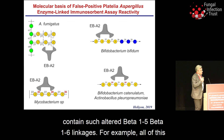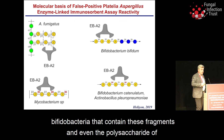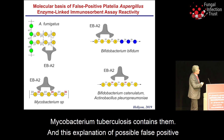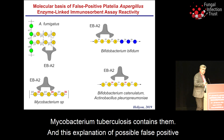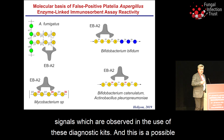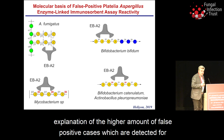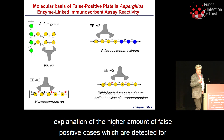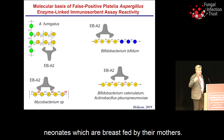This very important observation gives us the possibility to explain false positive signals observed with this diagnostic kit, because many of these bacteria were shown to produce polysaccharides which contain such alternating beta-1,5 and beta-1,6 linkages. For example, all these bifidobacteria contain these fragments, and even the polysaccharides of Mycobacterium tuberculosis also contain them. This is an explanation of the possible false positive signals observed with these diagnostic kits, and a possible explanation of the higher rate of false positive cases detected for neonates.